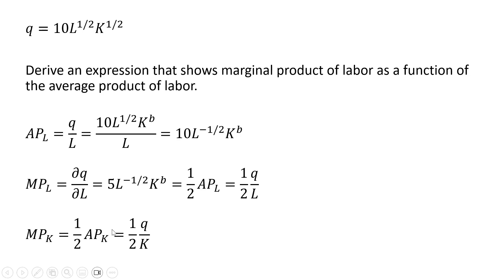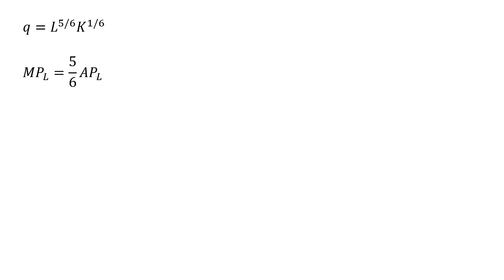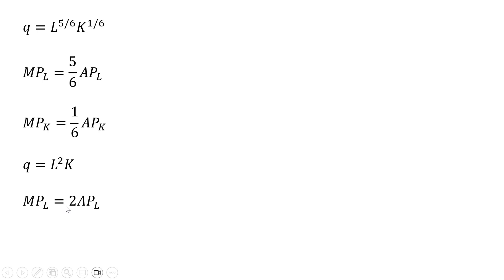For the marginal product of capital, similarly, the exponent on the K term multiplied by the average product of capital equals the marginal product of capital. A few other examples: given this Cobb-Douglas production function, the marginal product of labor can be written as follows. Here's another Cobb-Douglas production function — marginal product of labor would equal 2 times the average product of labor, since 2 is the exponent on the L term. And in this case, the marginal product of capital will equal the average product of capital, since the exponent on the K term is simply 1.